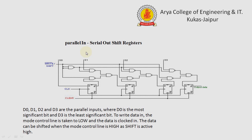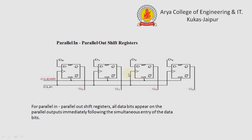The third type is the parallel input serial output shift register. In this type, the input is given in parallel form with circuitry applied so that the output is given in serial form. Here D0, D1, D2, and D3 are the parallel inputs, where D0 is the MSB and D3 is the LSB.